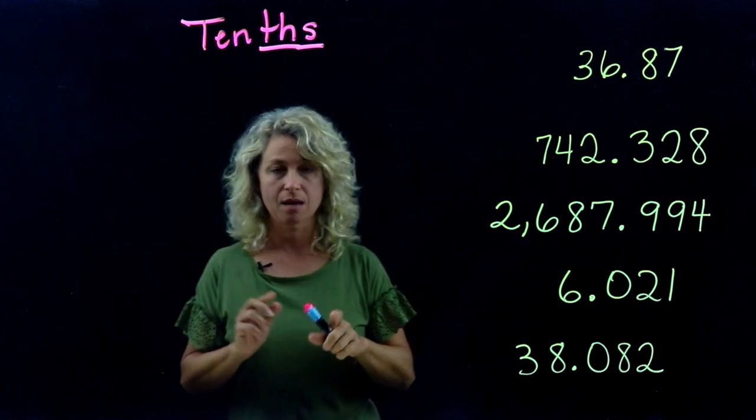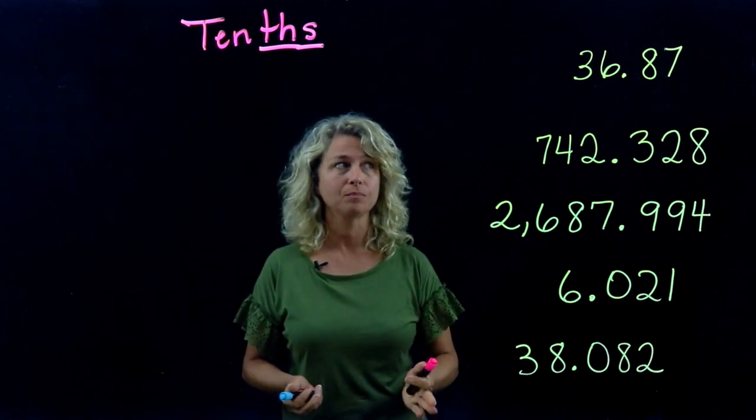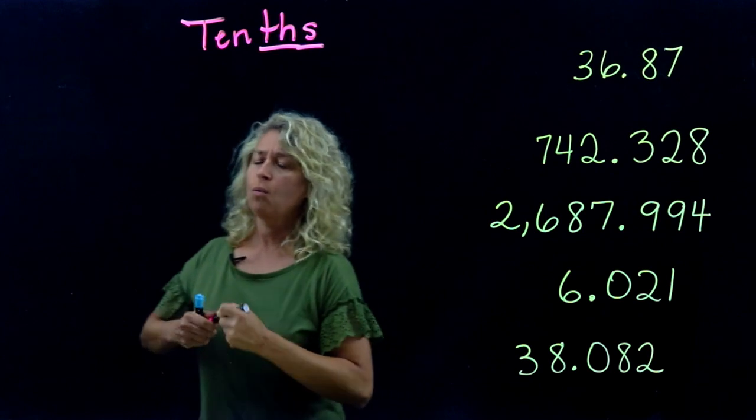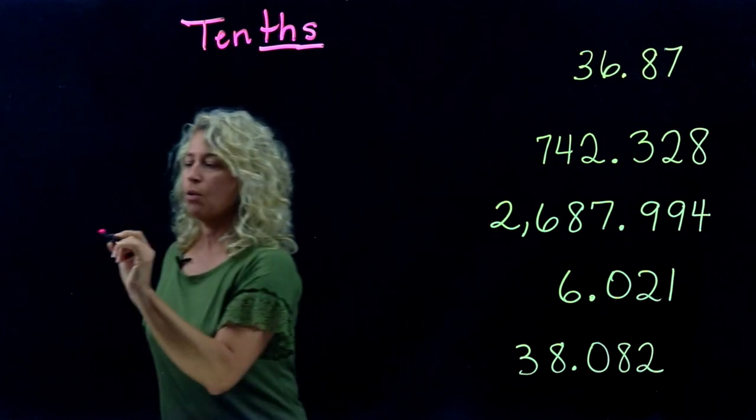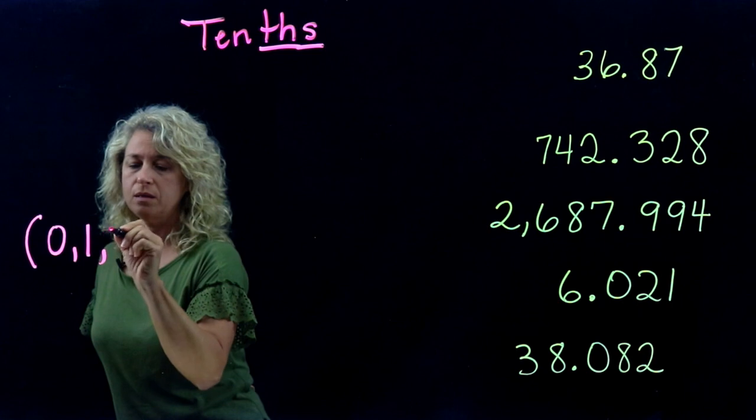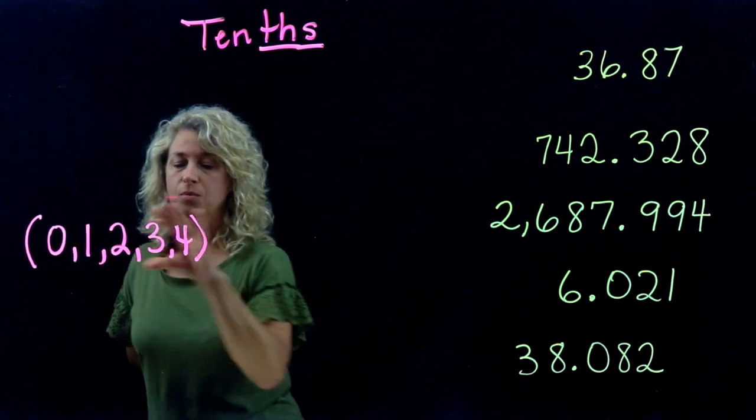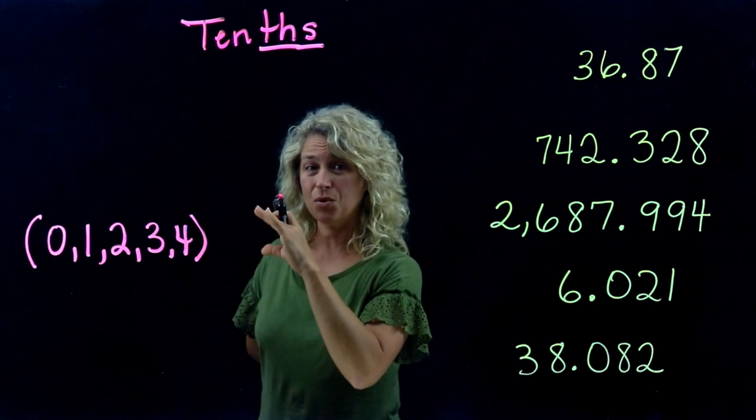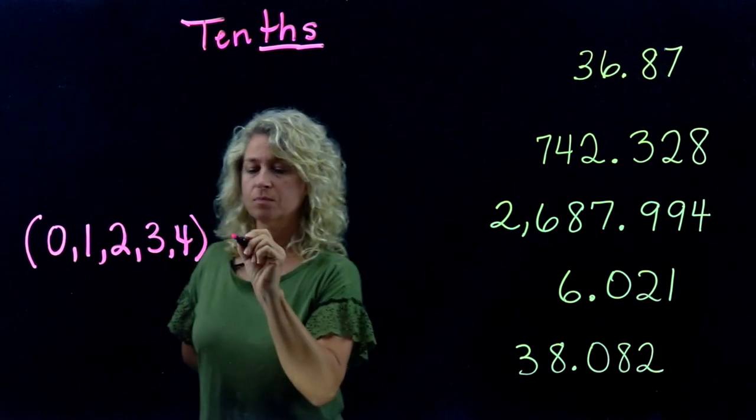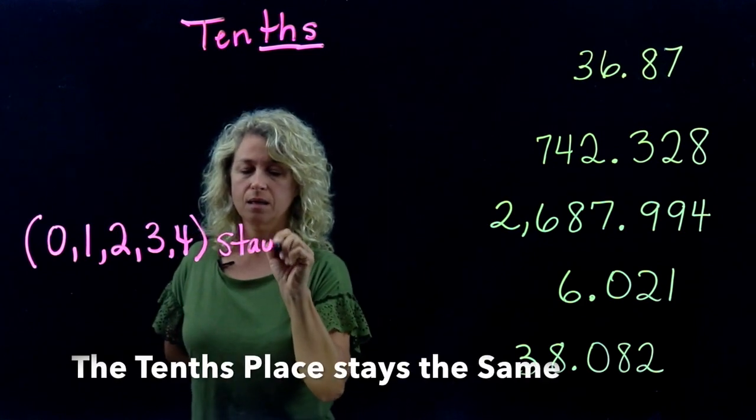When we round, we need to know that 0, 1, 2, 3, and 4 are numbers that allow us to keep the number the same. So this stays the same.